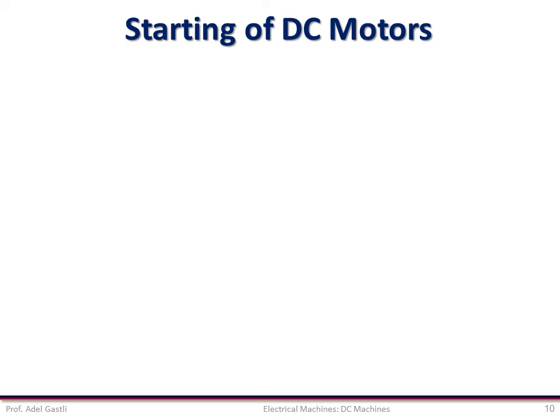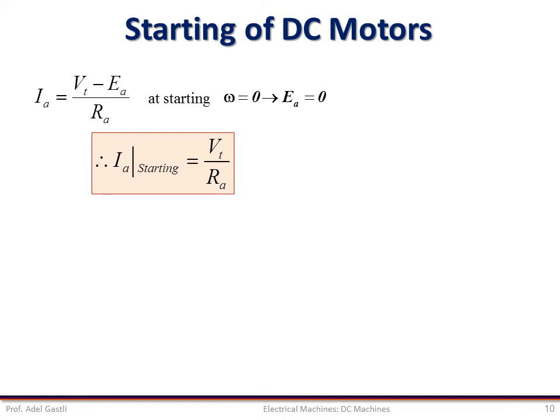Now we study the issue of starting DC motors. The armature current equation applies to almost all types of DC motors. At standstill, when the rotor is not rotating, armature speed is zero and the back EMF is also zero. So the starting current equals the terminal voltage divided by the armature resistance. If a DC motor is directly connected to a DC supply, the starting current will be dangerously high since RA is usually very small — a serious issue that must be carefully addressed. To limit starting current to its rated value, we can proceed in two ways.